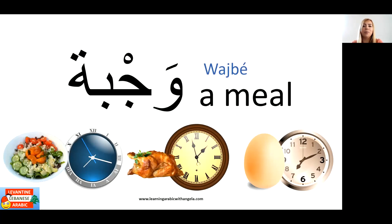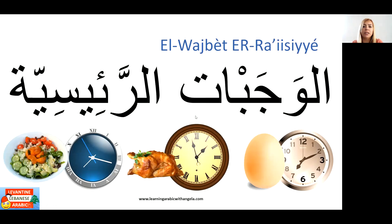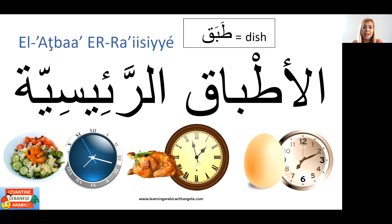'Wajbi' means a meal; 'wajbat' is the plural. 'Ra'isi' means main — it can also mean a president, like when we say 'ra'is Lubnan,' the president of Lebanon. So the main meal is 'el-wajbe el-ra'isiye.' Sometimes you'll also come across the word 'tabaq' — pronounced 'tabaq' in standard Arabic — meaning a dish, so 'el-atyba el-ra'isiye' means the main dishes.